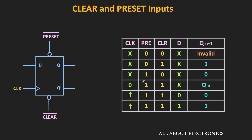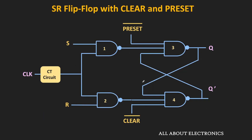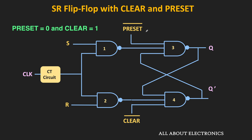Now let us see the flip-flop circuit with the preset and clear inputs, starting with the SR flip-flop. On the internet, you might have seen a particular circuit for the preset and clear inputs, but this circuit will not work properly. Let us see why. Here, both preset and clear inputs are active low. When the preset input is 0 and the clear input is 1, the output of the third NAND gate will become 1, because when any one input of a NAND gate is 0, its output becomes 1.